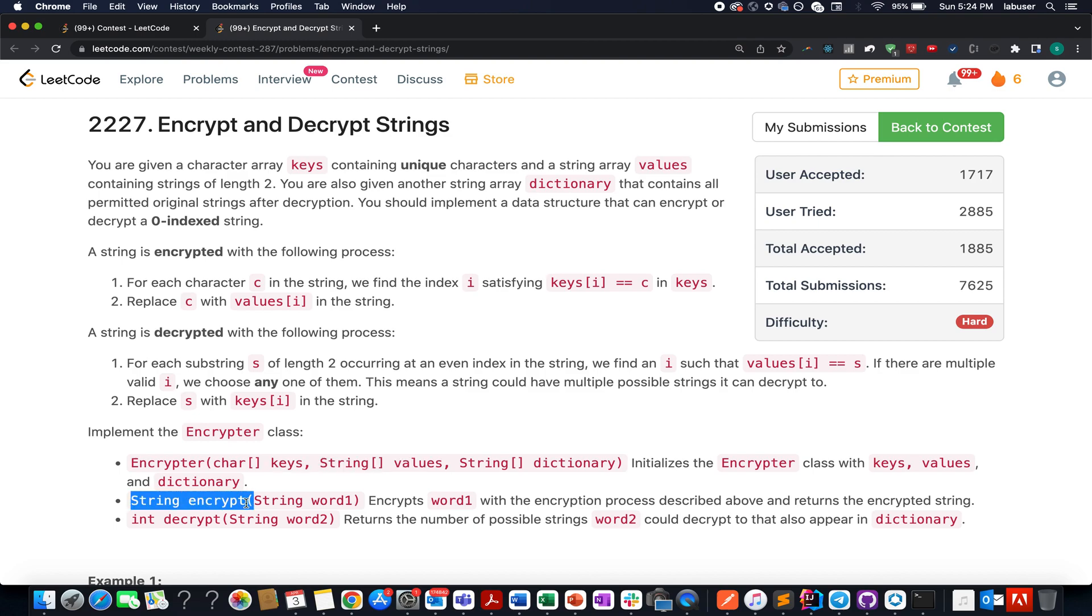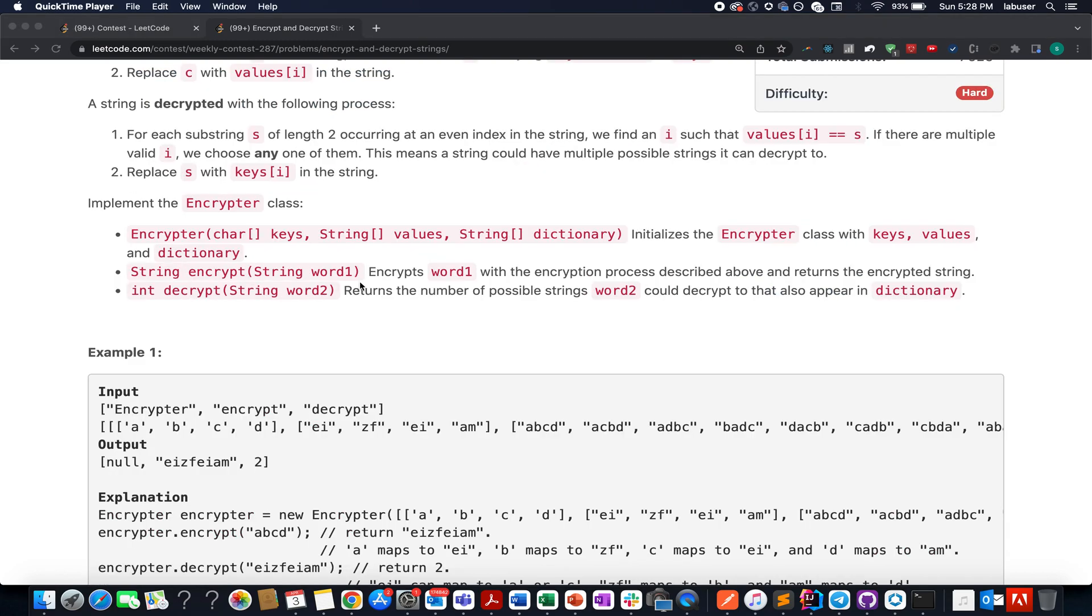Now comes the second helper method that we need to create, encrypt. Here using the map we have created, we need to encrypt this word and return the encrypted string.